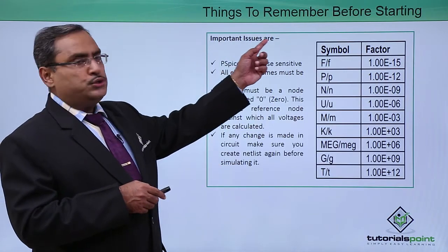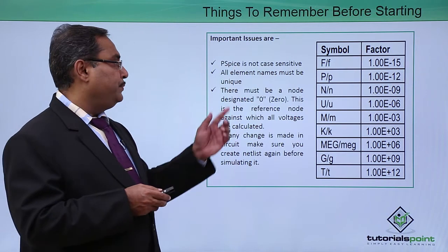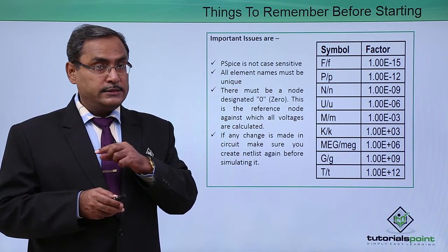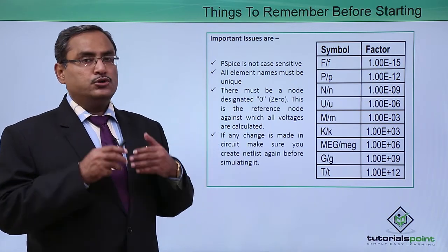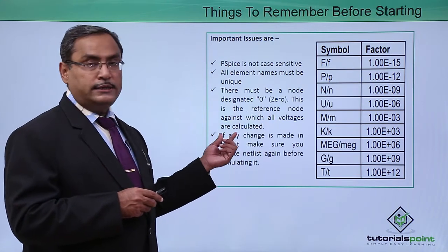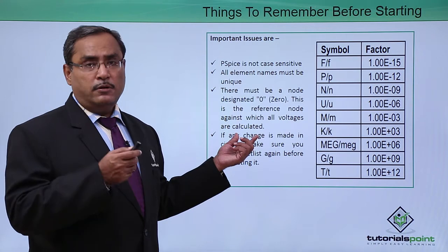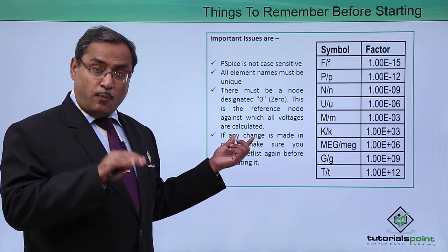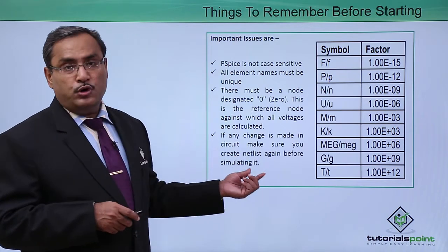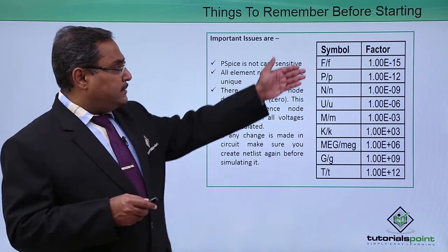Some important issues to note: PSPICE is not case sensitive, meaning you can write in uppercase and lowercase letters both. All element names must be unique — if you have a resistance named R1, you cannot give another resistor the same name R1; this applies to all parts. There must be a node designated by 0, which is the reference node against which all voltages are calculated — this corresponds to ground in analog circuits. If any change is made in the circuit, make sure you create the netlist again before simulating it.